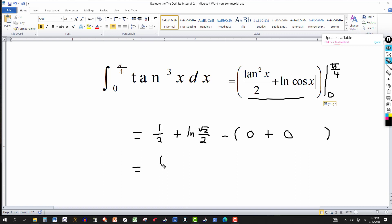So we get the value of the definite integral then is 1 half plus ln the square root of 2 over 2. And again we don't deal with any constant of integration here because we're dealing with definite integrals. So this is the final answer then. 1 half plus natural log of square root of 2 over 2.